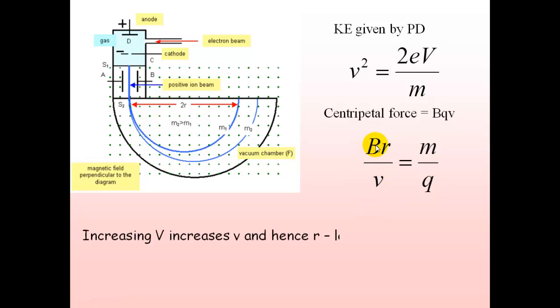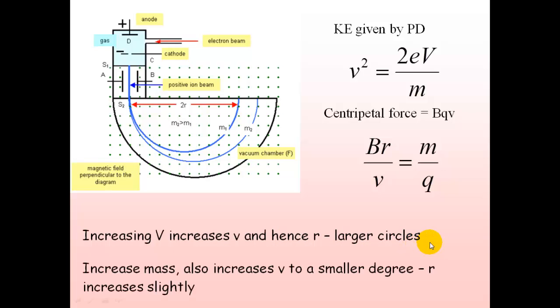So increasing the potential difference increases the velocity and hence R. Therefore we get larger circles, larger radius of curvature. If we increase the mass, this also increases V but to a smaller degree, which means that the R will increase slightly. And this is the mass spectrometer.